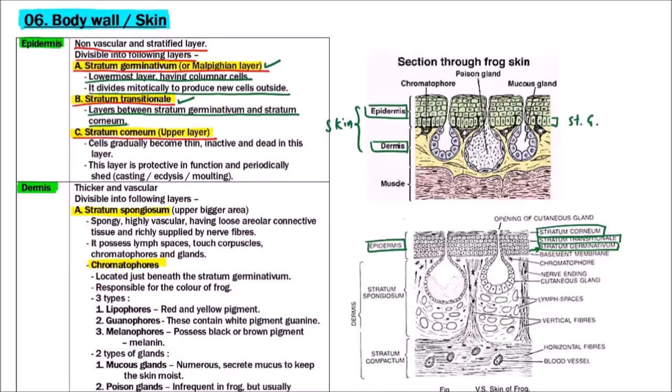Now the uppermost layer is stratum corneum. The cells gradually become thin, inactive, and dead in this layer. This layer is protective in function and is periodically shed, which is known as casting, ecdysis, or molting.